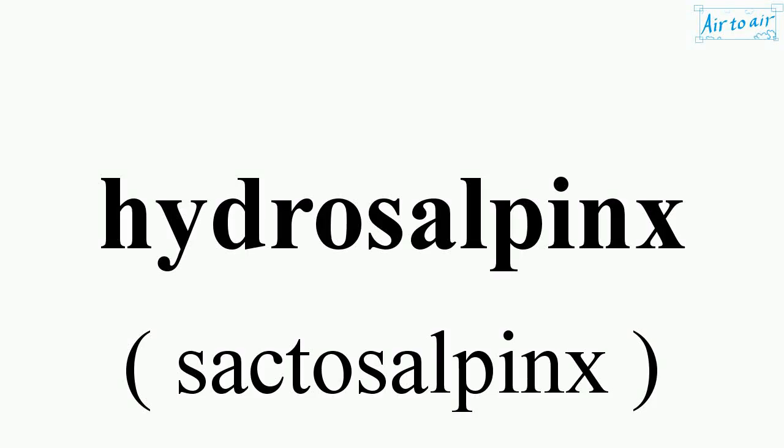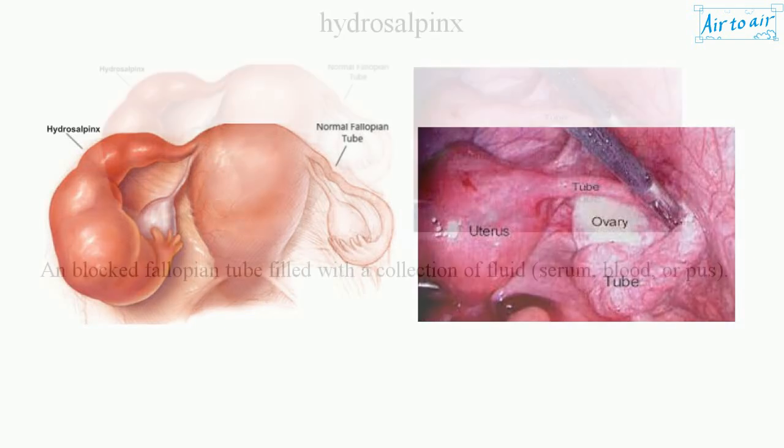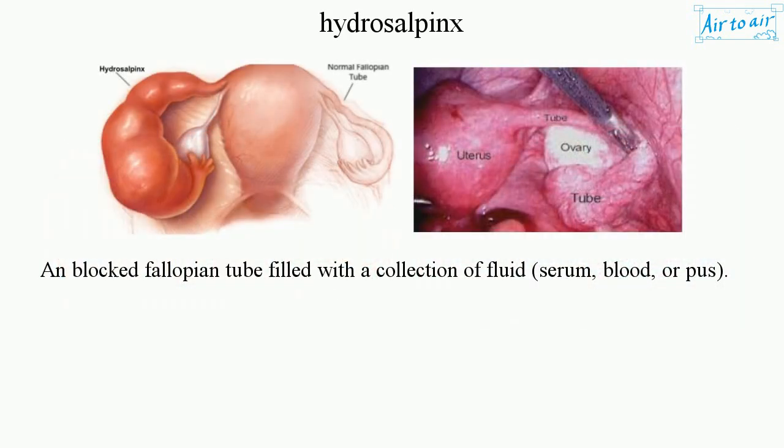Hydrosalpinx is a blocked fallopian tube filled with a collection of fluid — serum, blood, or pus.